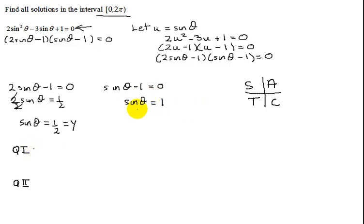And then this one, the sine of theta is 1. Remember values of 0 and 1 always occur on an axis. So let's go look at the unit circle.